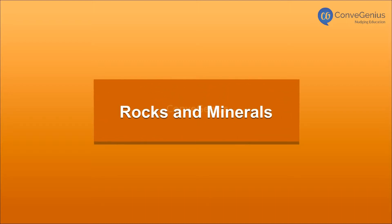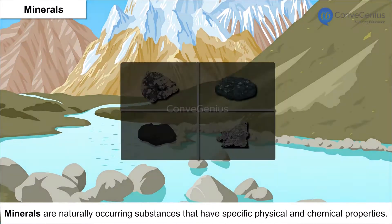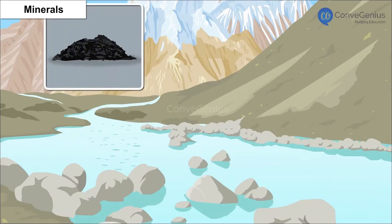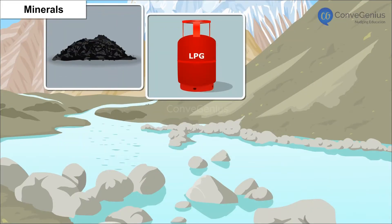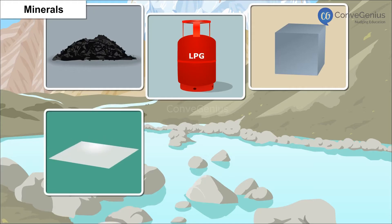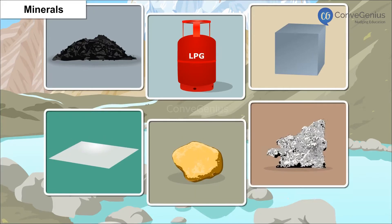Rocks and Minerals. Minerals are naturally occurring substances that have specific physical and chemical properties. They exist as coal, gas, and metals such as aluminium, tin, gold and silver.